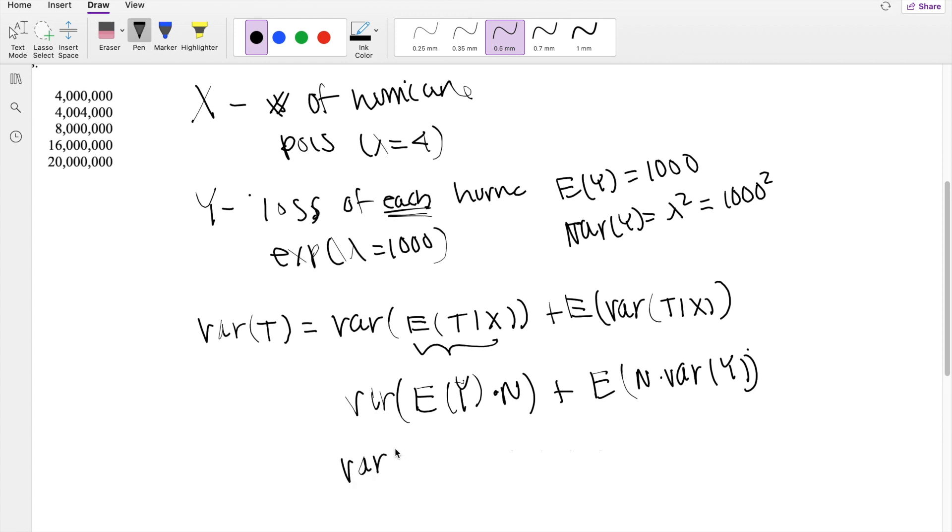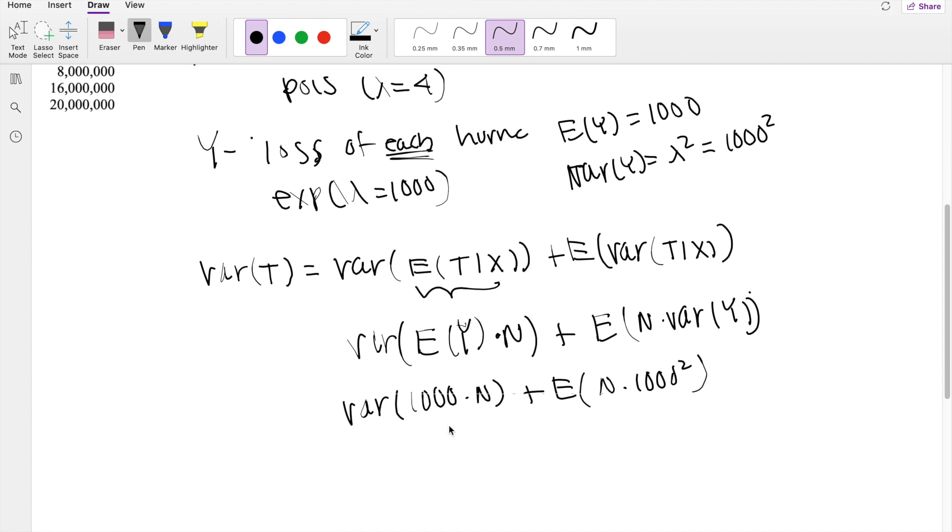Plugging those in, we get variance of expectation of Y, a thousand times N, plus the expectation of N times variance, which is a thousand squared. And now we can actually take out those thousand, but when we take that thousand out, this actually, we have to bring it back to the real world instead of the variance world. So we have to make sure we square it, variance of N, plus when we take out the thousand squared on this side, it's just going to stay the same, thousand squared times expectation of N.